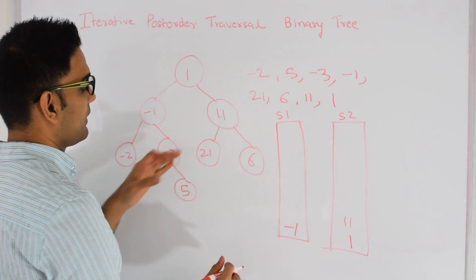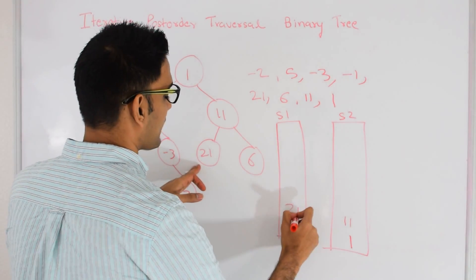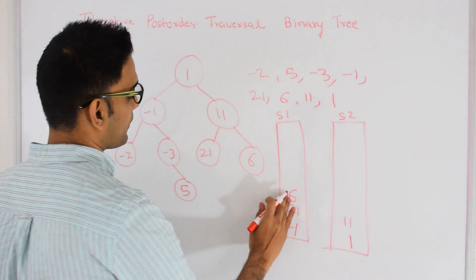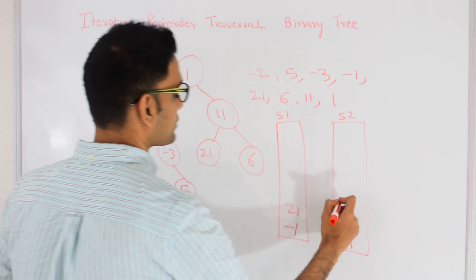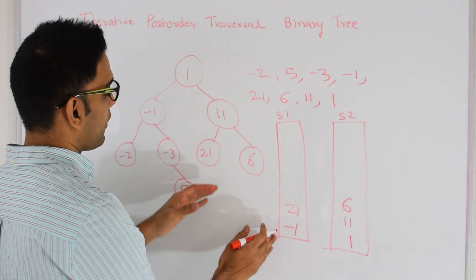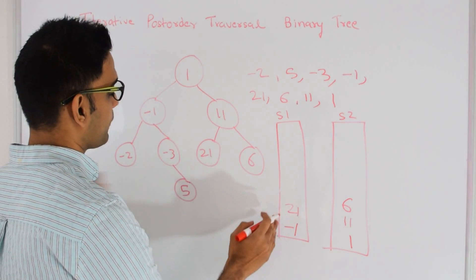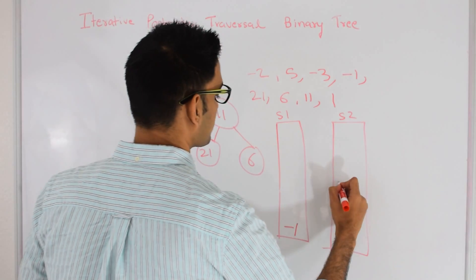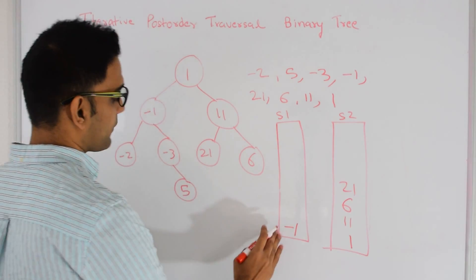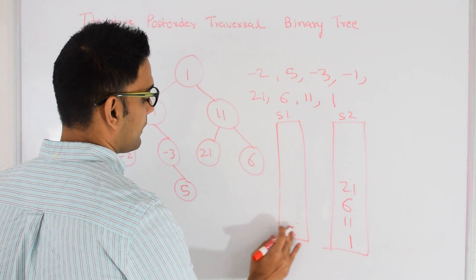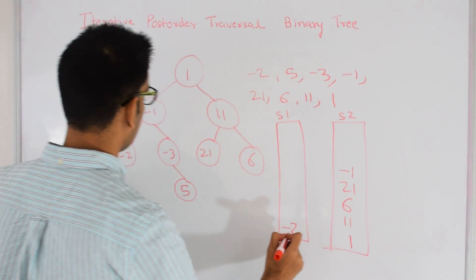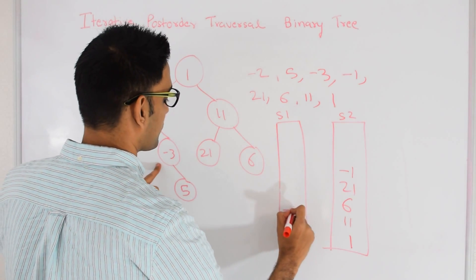I check if 11 has a left side — put that into the stack. If 11 has a right side — put that into the stack. Now I pop 6 from Stack 1 and push that into Stack 2. 6 doesn't have left or right. Now we pop 21 out of Stack 1 and push that into Stack 2. 21 doesn't have left or right. We pop -1 from Stack 1 and push that into Stack 2. -1 has a left, so -2 goes into the stack. And -1 has a right, so -3 goes into the stack.